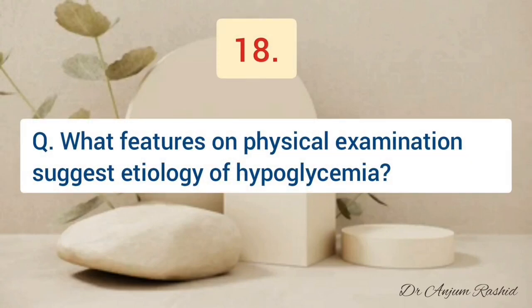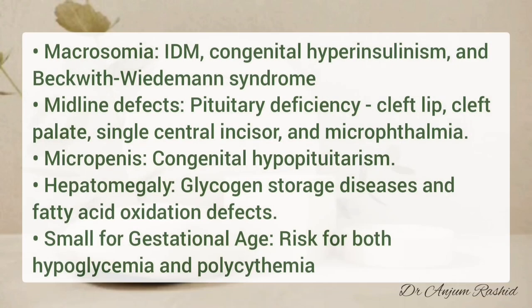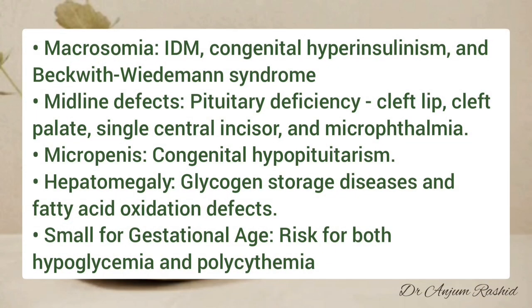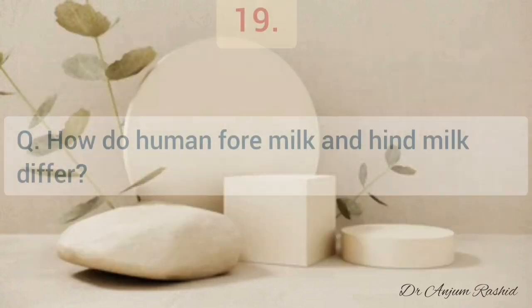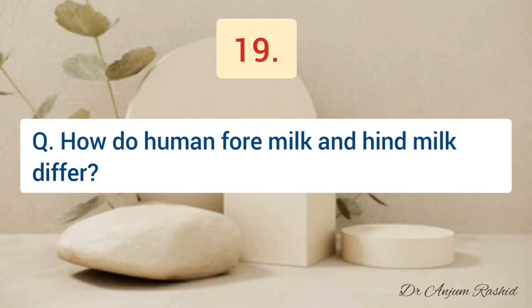What features on physical examination suggest the etiology of hypoglycemia? Macrosomia indicates infant of a diabetic mother, congenital hyperinsulinism, or Beckwith-Wiedemann syndrome. Midline defects indicate congenital pituitary deficiency. Micropenis is present in congenital hypopituitarism. Hepatomegaly indicates glycogen storage disease and fatty acid oxidation defects. Small for gestational age is a risk factor for both hypoglycemia and polycythemia.